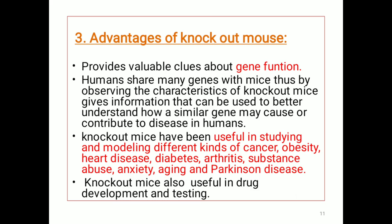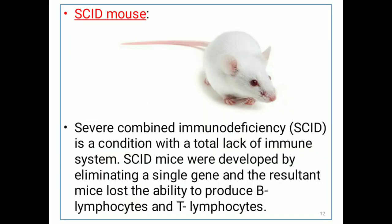Advantages of knockout mice: Knockout mice provide valuable clues about gene function. Humans share many genes with mice, so observing the characteristics of knockout mice gives information that can be used to better understand how a similar gene may cause or contribute to disease in humans. Knockout mice have been useful in studying and modeling different kinds of cancers, obesity, heart disease, diabetes, arthritis, substance abuse, anxiety, aging, and Parkinson's disease. Knockout mice are also useful in drug development and drug testing.